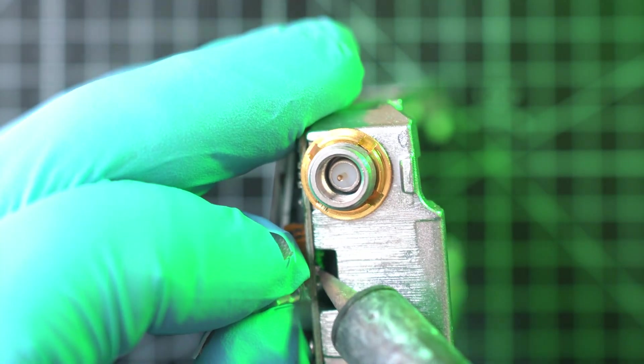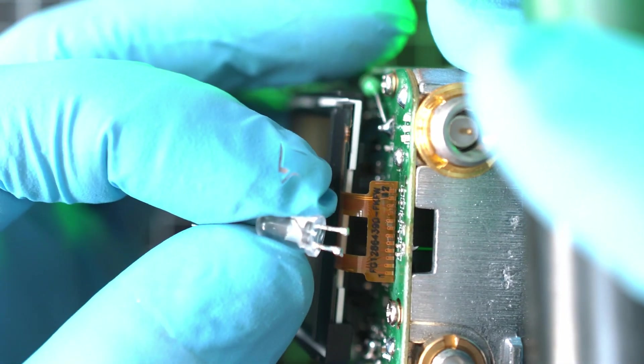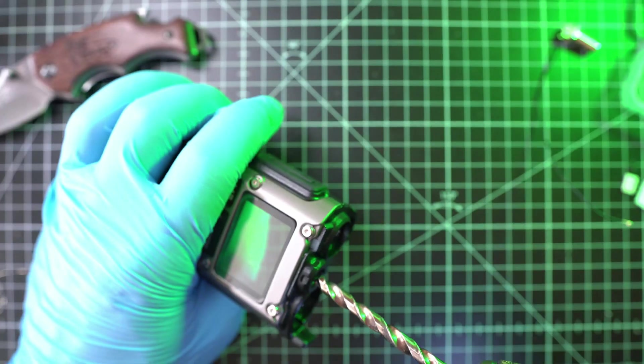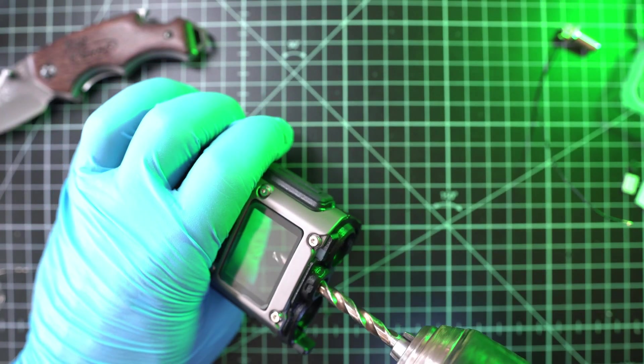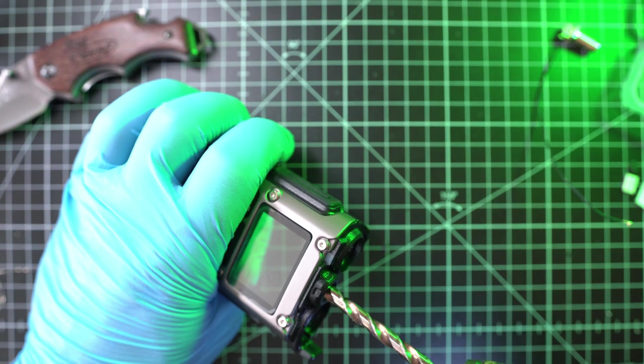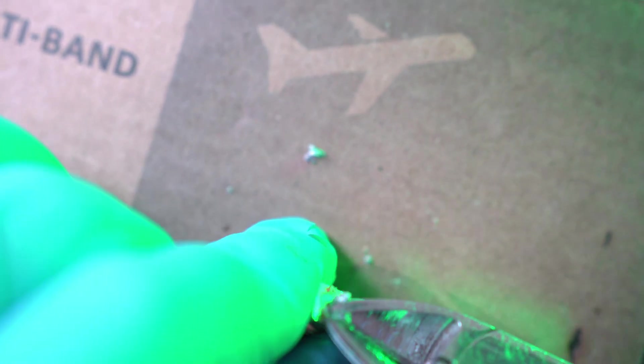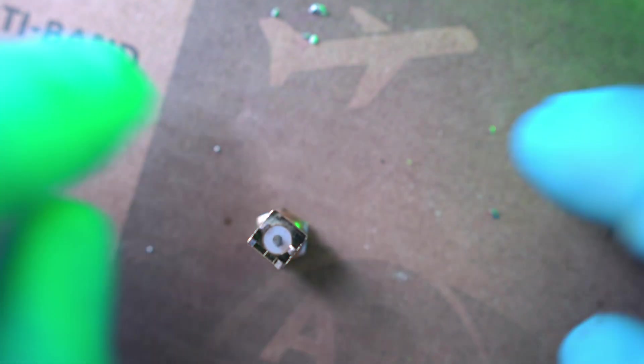Let's desolder the LED from top like so and enlarge the LED hole in the case with a 6.5mm drill bit. Next, cut off all terminals from the SMA connector as they are too long.